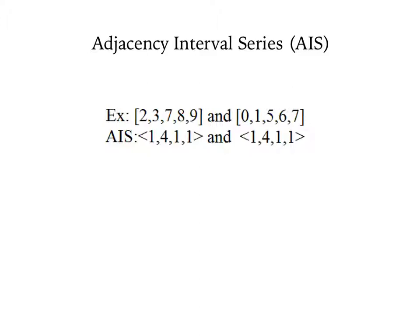Another way to compare pitch class sets is through the adjacency interval series, or AIS for short. Again, in order to compare two sets, they must have the same number of pitch classes. The adjacency interval series, or AIS, is the set of ordered pitch class intervals between adjacent pitch classes. For example, here are two sets that we have found to be transpositionally equivalent by T10.